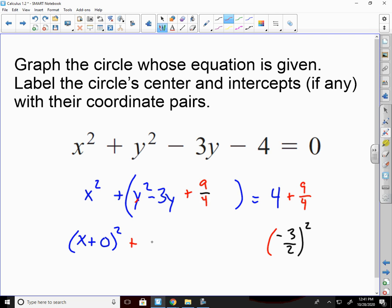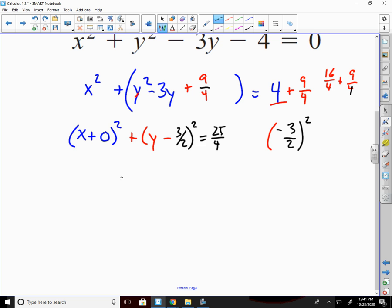Now I can rewrite my equation. That's plus Y minus 3 over 2 squared equals... Now I have to get a common denominator. So I have to put the 4 over 4. If I multiply the bottom by 4, multiply the top by 4. That gives me 16 fourths plus 9 fourths, which is 25 fourths. I'll do our center point. 0 and 3 over 2. And our radius is equal to the square root of this, which is 5 over 2. And we're done.